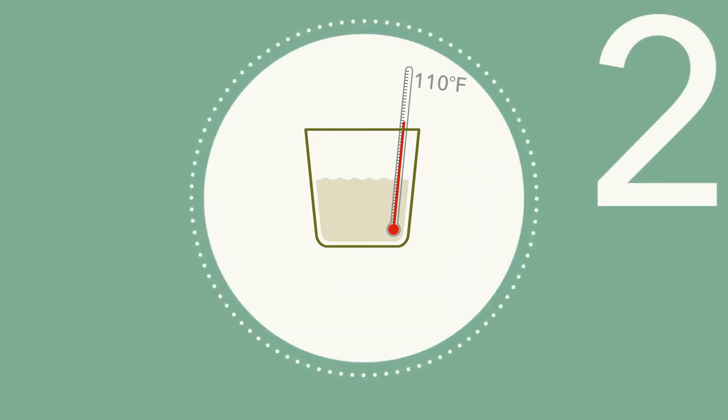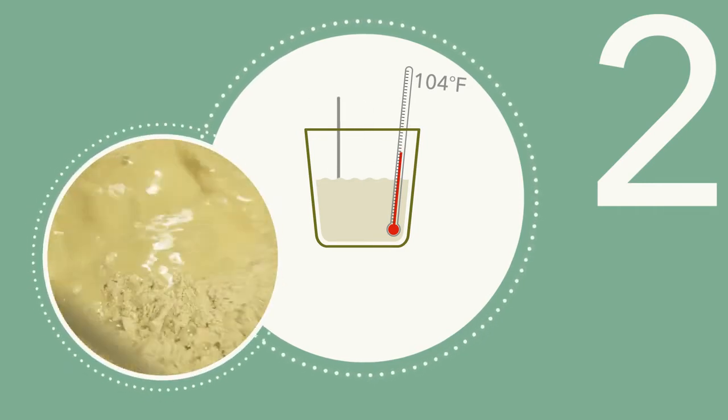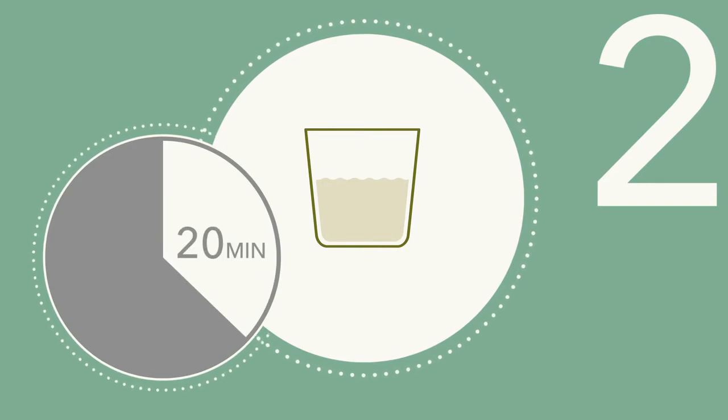Step 2: Once the temperature of the nutrient solution has dropped to 104 degrees, add the yeast. Stir gently to break up any clumps. Let suspension stand for 20 minutes, then stir again.